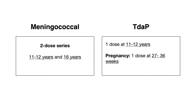The meningococcal vaccine covers against various serotypes of Neisseria meningitidis and is given as a two-dose series, typically at 11 to 12 years of age and then at 16 years of age. A way to remember the 16-year mark is that you're giving the vaccine right before most teenagers head to college, living in dorms and tight spaces where exposure risk is higher.